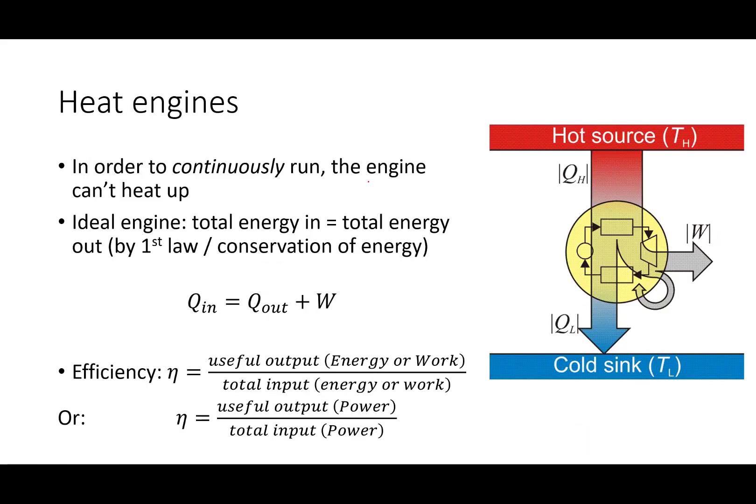Now, in order to continuously run, the engine can't heat up, which means that it can't have any extra energy at the end of an engine cycle. So for an ideal engine, the first law of thermodynamics, or conservation of energy, is going to apply, which means the total energy going in, which in this diagram is QH, is equal to the total energy going out, which in the diagram is QL, or the output heat, plus the useful work that's done. We're going to use this diagram. It's called a Sankey diagram. We could also call it an energy diagram or a black box diagram to help us understand and analyze heat engines.